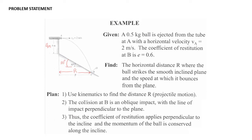Let's take a look at an example. In this problem, a 0.5 kilogram ball is ejected from the tube at point A with a horizontal velocity V_A equal to 2 meters per second. The coefficient of restitution at B is e = 0.6. Point A is where the ball is ejected with V_A of 2 m/s in the horizontal direction, and point B is where it bounces off the sloped plane.